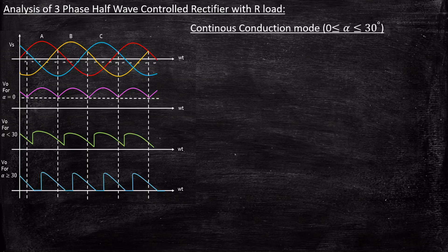We are going to consider two modes. The first is continuous conduction mode, that is zero less than alpha less than 30 degrees. We have seen this operation in continuous conduction mode in detail through the waveforms corresponding to cases two and three.